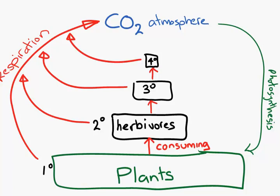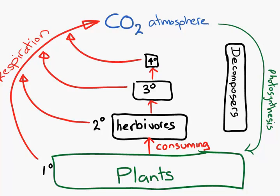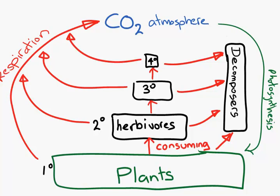We're missing one important group here to finish this off, and that would be our decomposers. As plants die, they're broken down by decomposers. Herbivores die, broken down by decomposers — same here and same here. And decomposers, of course, are all respiring, leading to carbon dioxide in the atmosphere.